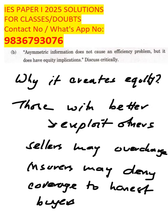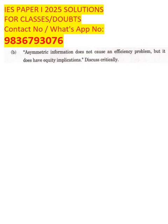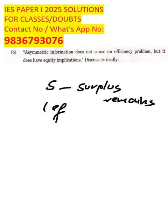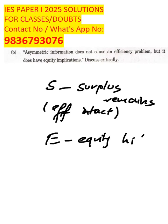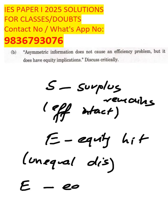It worsens the fairness. Here we can write the mnemonic as surplus remains - S - the surplus remains, that means efficiency intact. Next, we are having E, that's equity hit, that means unequal distribution. As a result, examples proof where we see the car.